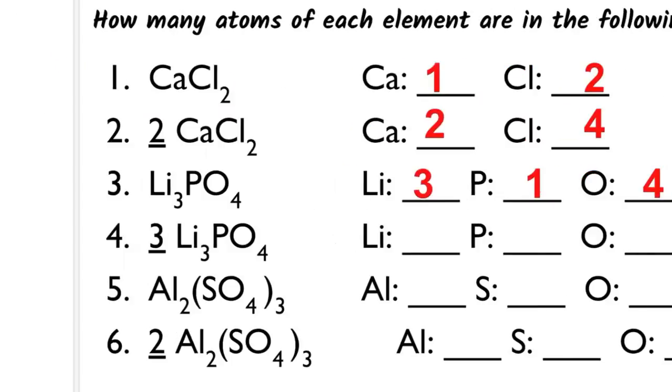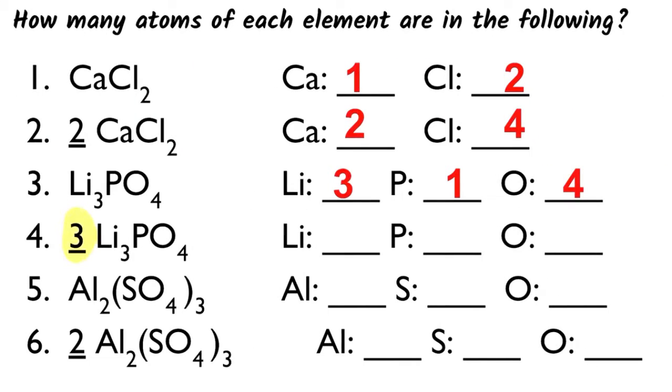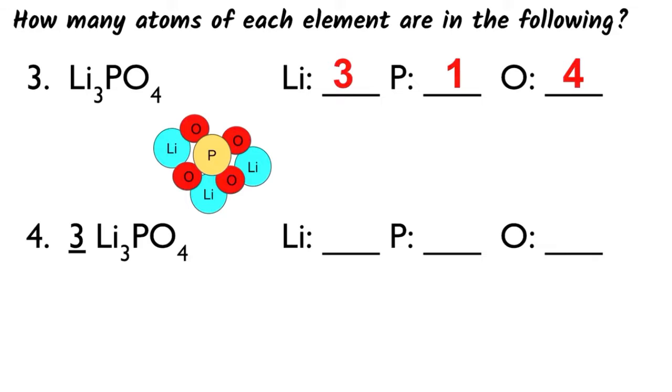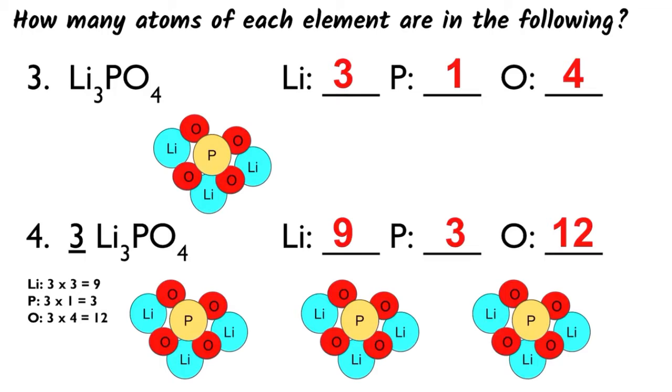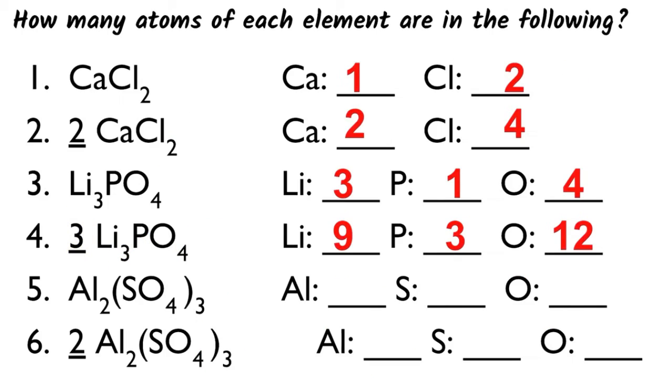For number four, 3 Li3PO4, three lithium phosphate. I am essentially taking the particle with three lithiums, four oxygens, and one phosphate, and I am multiplying it by three or drawing it three times. So I end up with nine lithiums, three phosphoruses, and twelve oxygens. You can also think of this as just multiplying each of the coefficients by three or multiplying the count that we had when we counted just one lithium phosphate by three.